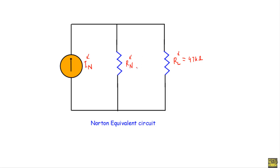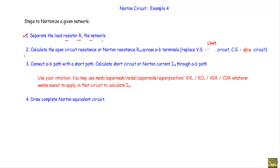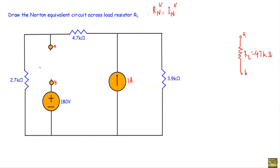To calculate the open circuit or Norton resistance RN across A-B terminals, we have to replace the voltage sources with short circuits and the current sources with open circuits. We will calculate Norton resistance with respect to the A and B terminals. This is a voltage source — we will replace it with a short circuit. This is a current source — we will replace it with an open circuit.